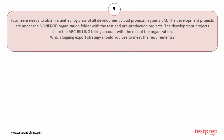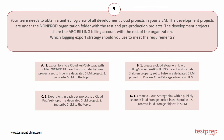Question number nine: your team needs to obtain a unified log view of all Development Cloud projects in your SIEM. The development projects are under the Non-Prod Organization folder with the Test and Pre-Production projects, and share the ABC Billing account with the rest of the organization. Which logging export strategy should you use? Options: A) export logs to a Cloud Pub/Sub topic with folders/non-prod parent and include-children property set to true in a dedicated SIEM project, then subscribe SIEM to the topic. B) create a Cloud Storage sync with billing-account/abc-billing parent and include-children property set to false in a dedicated SIEM project, then process Cloud Storage objects in SIEM.